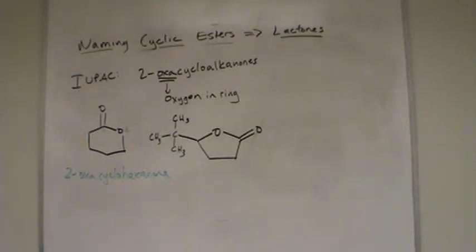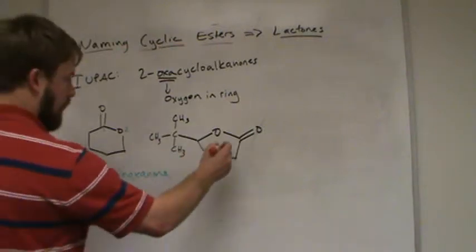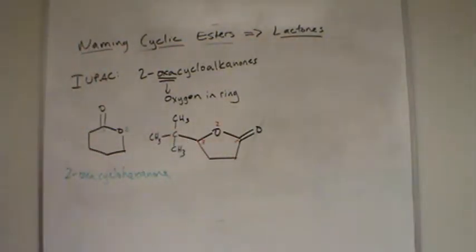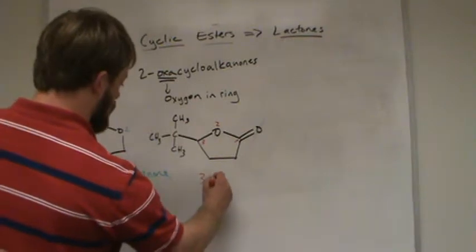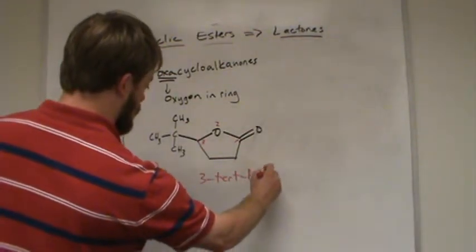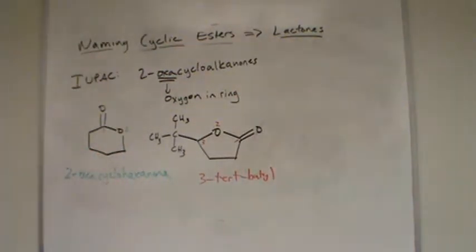So now if we name this other lactone with a substituent, we number one, two, three, so that carbon has to be three, and the substituent at the three position is a tert-butyl group. So it's 3-tert-butyl, 3-tert-butyl what?